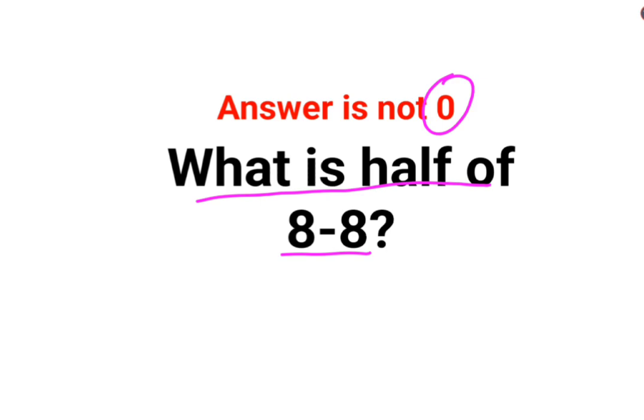Let's write the question one more time. What is half of 8 minus 8? So the answer for this question is not 0. The reason for that is division and multiplication always hold higher precedence than addition and subtraction.